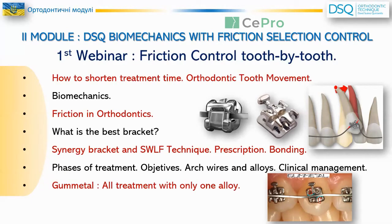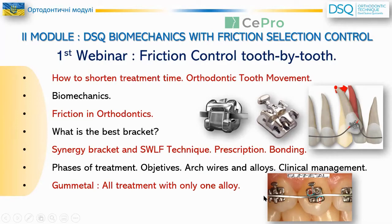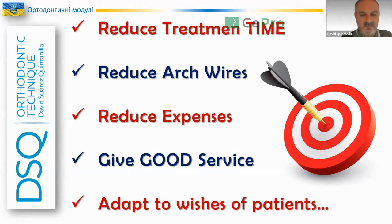We will discuss the use of new high-technology alloys, including gum metal — a new wire to treat the patient with only one arch wire and one alloy. The objective of our technique is to reduce treatment time, reduce the number of arch wires, reduce expenses, give good service to the patient with fewer appointments, shorten the treatment, and adapt our appliances to the wishes of the patient.